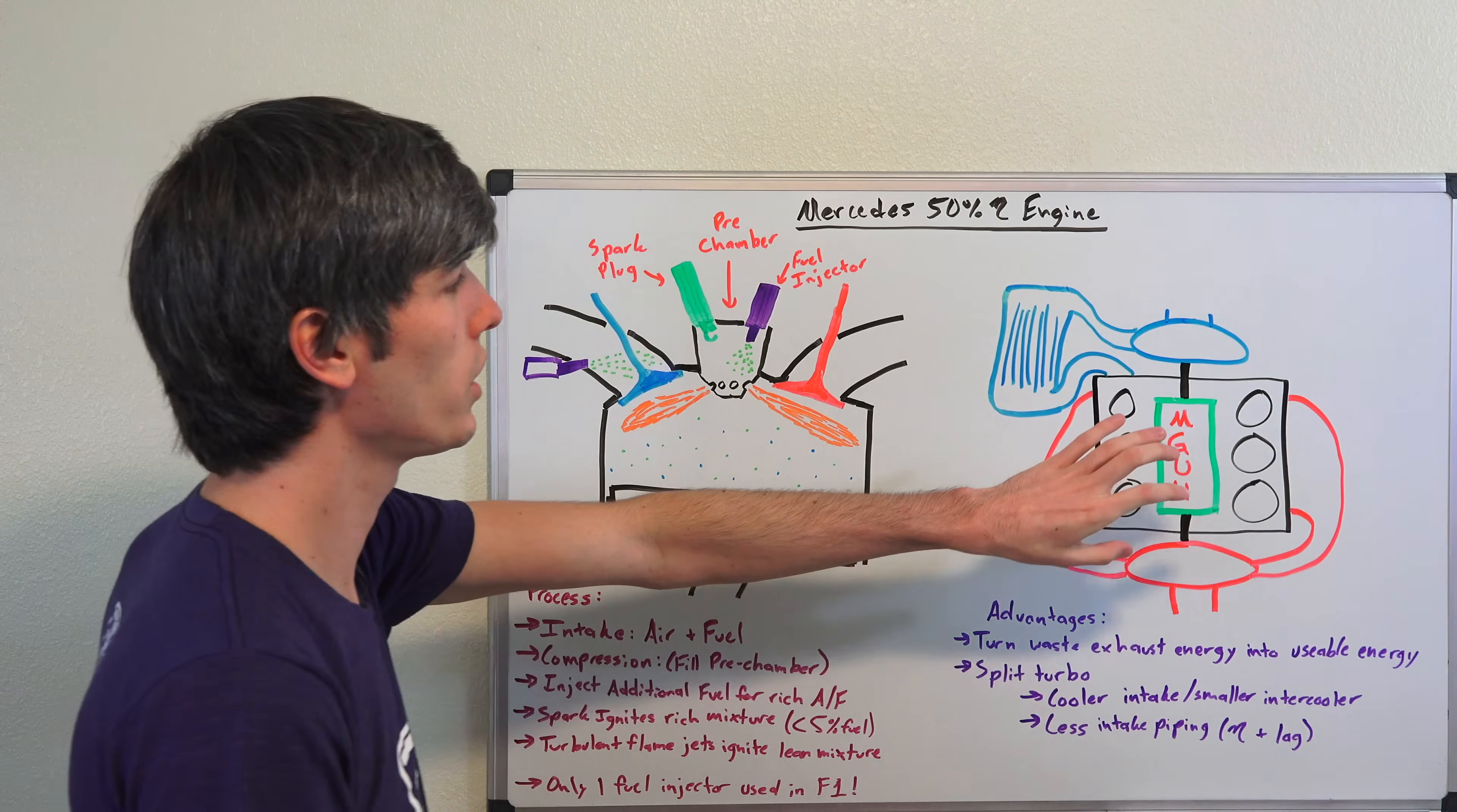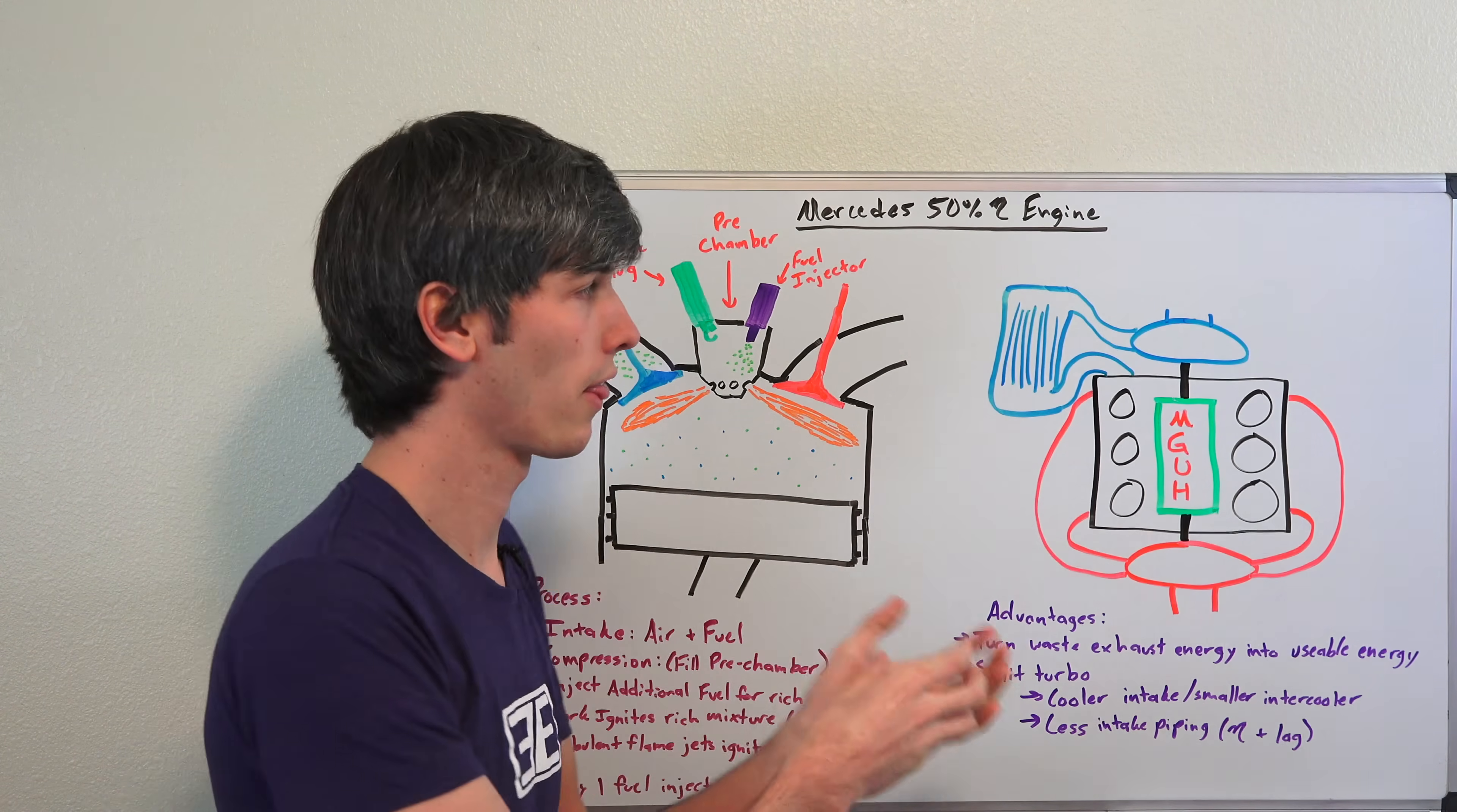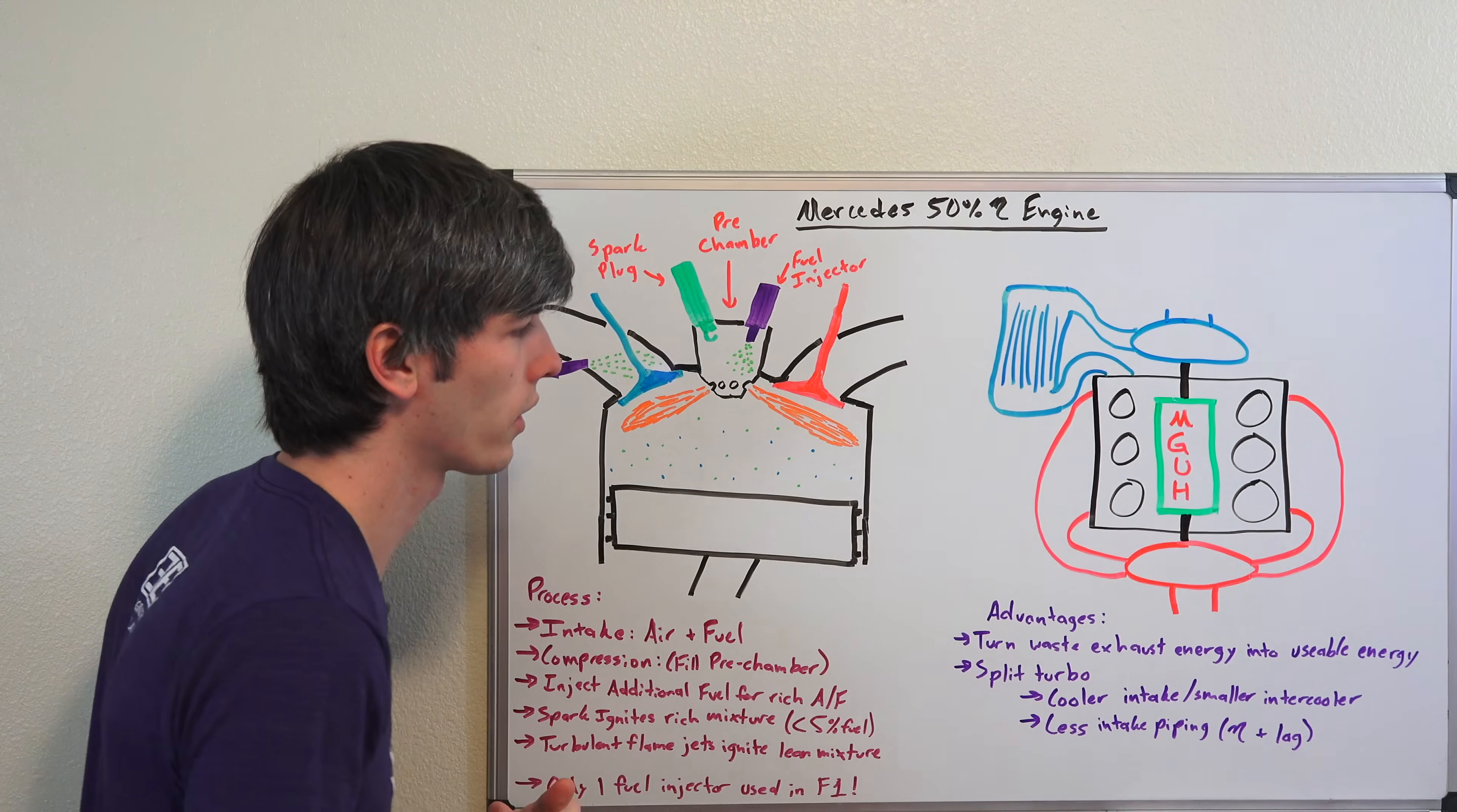There is something called MGU-H, motor generator unit heat, which uses the turbocharger to spin up an electric motor. You've got your exhaust that spools up a turbocharger that's connected to a shaft which spins up an electric motor. That electric motor then sends power to a battery pack which can then send that energy to another motor which can be used to power the rear wheels. So the big advantage here is that you're turning waste energy from the exhaust instead into useful energy by powering a generator, and then using that stored energy to then later accelerate the car.